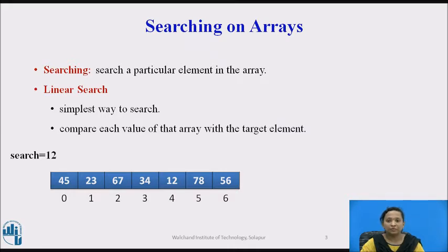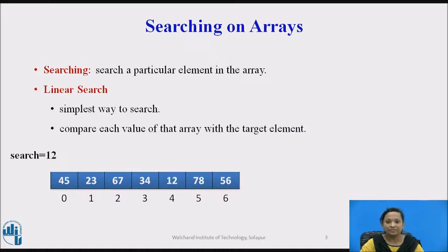Linear search is the simplest way of searching a particular element in the array. In the linear search approach, the search element is compared with each value of the array. In this example, the array contains 7 elements: 45, 23, 67, 34, 12, 78, and 56. The search element is 12.